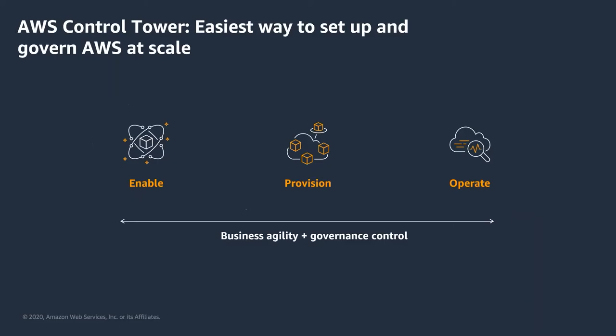The last service I'll touch on today is Control Tower. It's a service that makes it easy for you to set up, scale, and govern your multi-account setup on AWS. It allows you to enable, provision, and operate your AWS environment with business agility and governance control, so your developers can have the agility they need to build and innovate on AWS, while there are central policies for security, compliance, and spend management that can all be governed centrally.